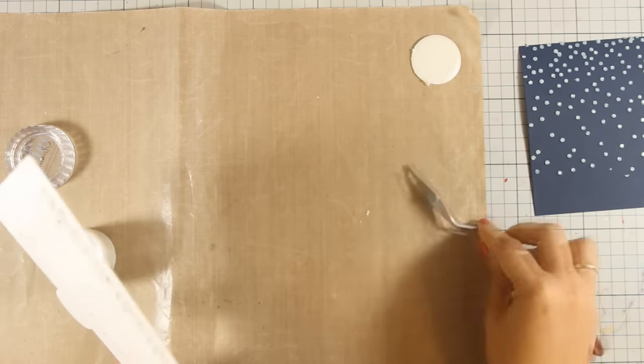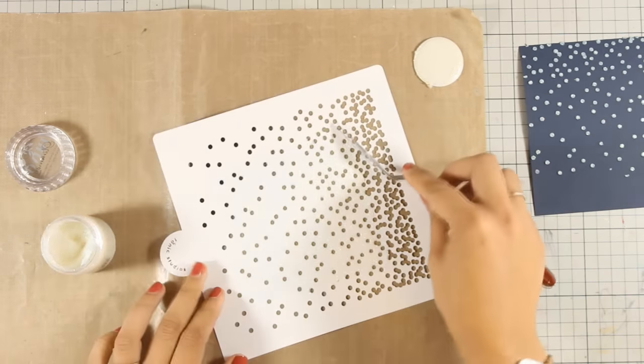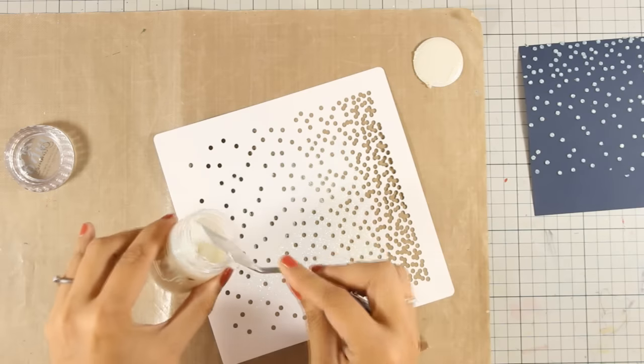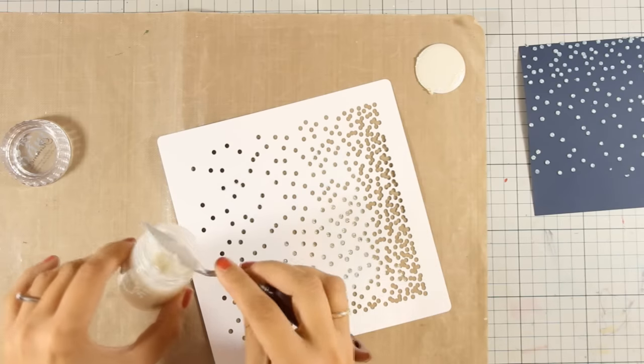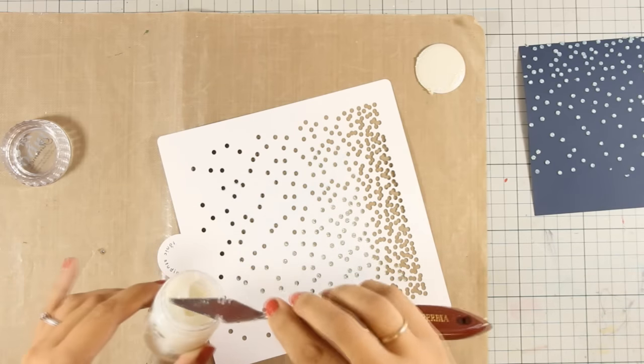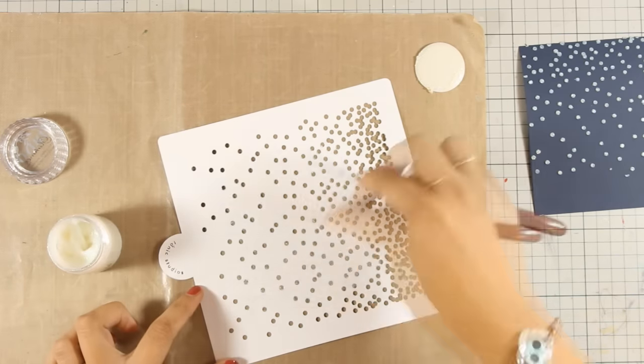I'm going to use my spatula and scrape off all the excess product and put it back in the jar. You want to clean your stencil with a baby wipe or wash it in the sink just to make sure that nothing is going to block all those little holes.